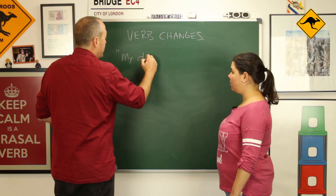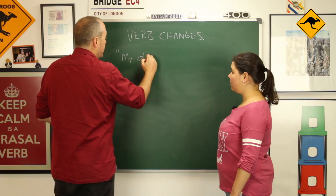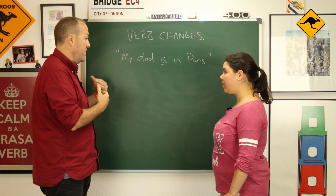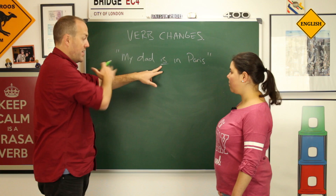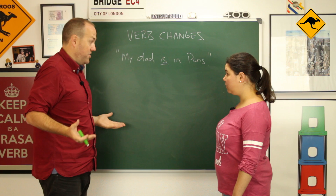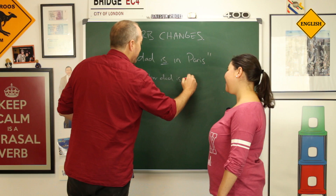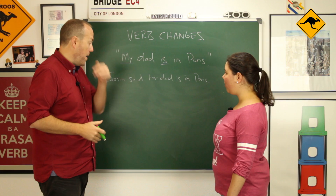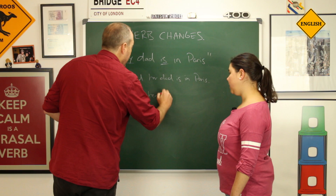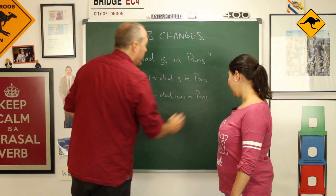If you give me a sentence with the present tense — for example, 'My dad is in Paris' — by changing the verb, we can decide whether something is true now or whether it's in the past. Imagine you said this yesterday: today when I tell my friend, her dad is still in Paris today, so I could say: Sonia said her dad is in Paris. But imagine I tell my friend in two weeks and your dad is now back in Spain — I would say: Sonia said her dad was in Paris.